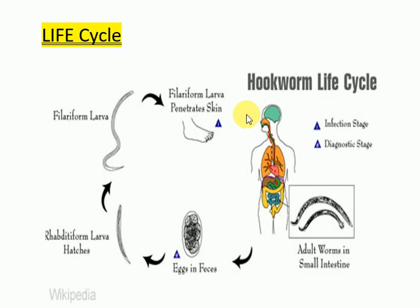In the lungs it breaks through the capillary walls and enters the alveolar spaces, then migrates to the bronchi, trachea, larynx, crawls over the epiglottis to the back of the pharynx, and is ultimately swallowed, reaching the esophagus in about ten days. During migration, on entering the esophagus, the third molting takes place and a terminal buccal capsule is formed. The growing larva then settles in the small intestine and undergoes a fourth molting to develop into adult worms with a definite buccal capsule and complete six teeth, becoming adult worms at three to four weeks.